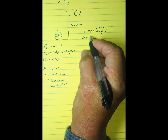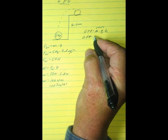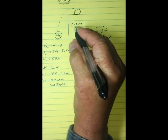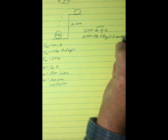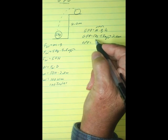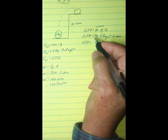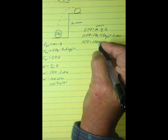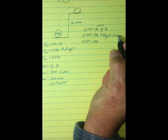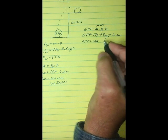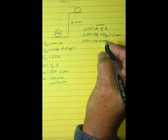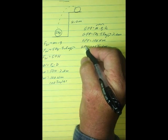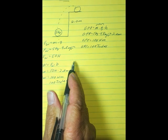Let's go ahead and solve the problem. The mass was 5 kilograms, times the acceleration due to gravity — I rounded 9.8 to 10 — times the height of 2 meters. So the gravitational potential energy is 5 times 10, which is 50 newtons, times 2 meters, giving us 100 newton meters, or 100 joules of gravitational potential energy stored by setting that ball up on top of the shelf.